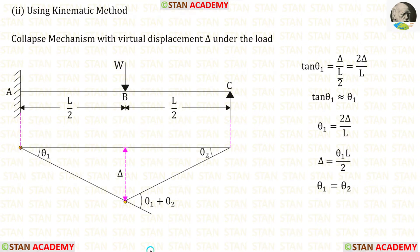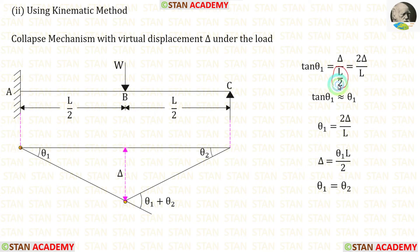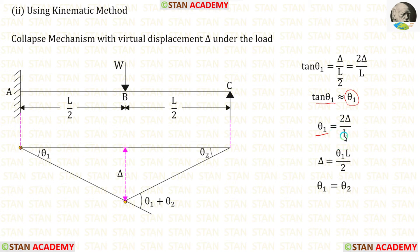Now let us use the kinematic method. We assume that due to the point load there is a virtual displacement delta. Let the angle on the left side be theta 1 and the angle on the right side be theta 2, so the total angle under the load is theta 1 plus theta 2. Taking the left triangle, tan(theta 1) equals delta divided by L/2, which gives tan(theta 1) = 2·delta upon L. Since the angle is very small, tan(theta 1) is approximately equal to theta 1, so theta 1 = 2·delta upon L.